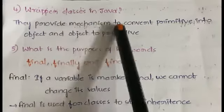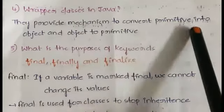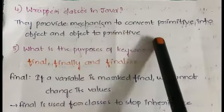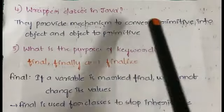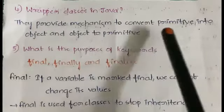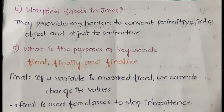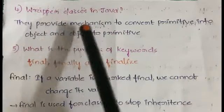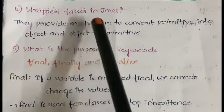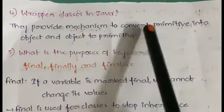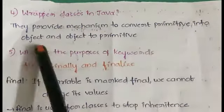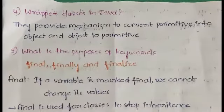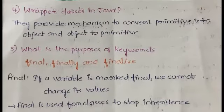Wrapper classes provide a mechanism to convert primitives into objects and objects into primitives. Since Java is an object-oriented programming language, wrapper classes give us the ability to convert primitive types into objects and objects back into primitive types.